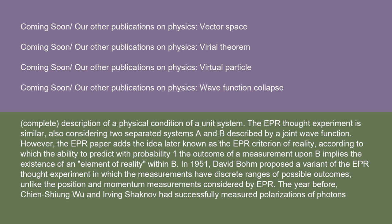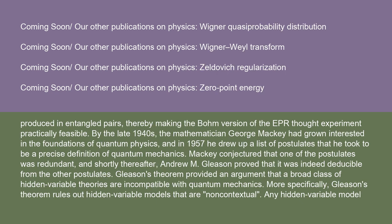Since there can be only one physical condition of B after the interaction, which cannot reasonably be considered as dependent on the particular measurement we perform on the separated system A, it may be concluded that the ψ function is not unambiguously coordinated with the physical condition, showing again that the ψ function cannot be interpreted as a complete description of a physical condition of a unit system. The EPR thought experiment is similar, also considering two separated systems A and B described by a joint wave function. The EPR paper adds the idea known as the EPR criterion of reality, according to which the ability to predict with probability 1 the outcome of a measurement upon B implies the existence of an element of reality within B. In 1951, David Bohm proposed a variant in which the measurements have discrete ranges of possible outcomes. The year before, Chien-Shiung Wu and Irving Shaknov had successfully measured polarizations of photons produced in entangled pairs, making the Bohm version practically feasible.